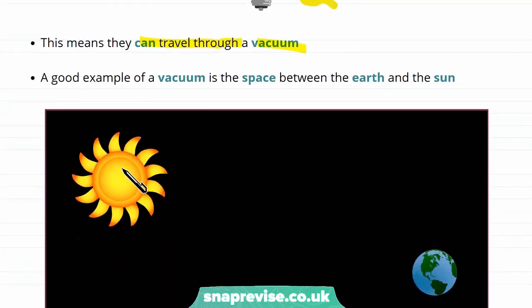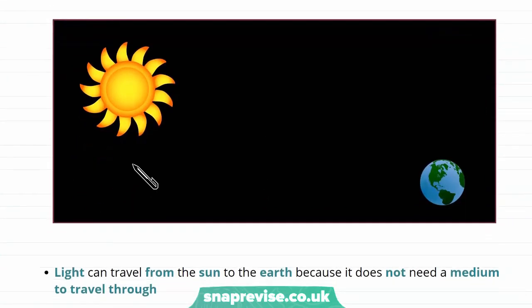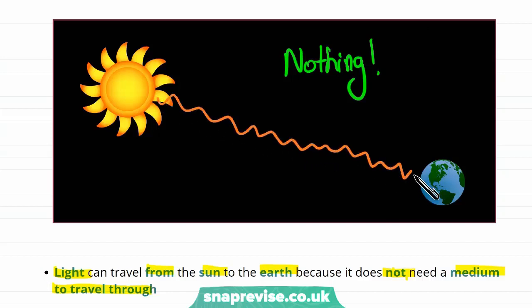A good example of a vacuum is the space in between the Earth and the Sun. This picture is not at all to scale, but light can travel from the Sun to the Earth because it does not need a medium to travel through. Space is a good example of a vacuum because there is pretty much nothing in space, but light can still travel through it.